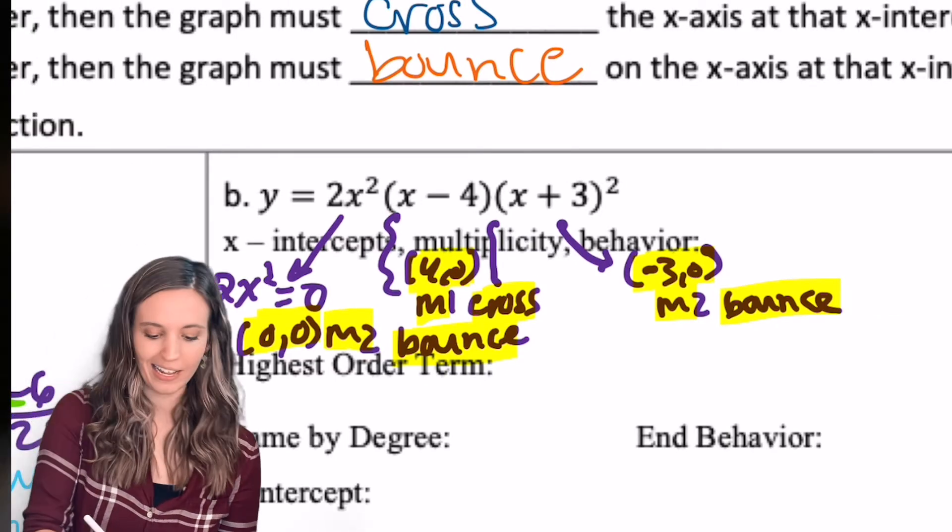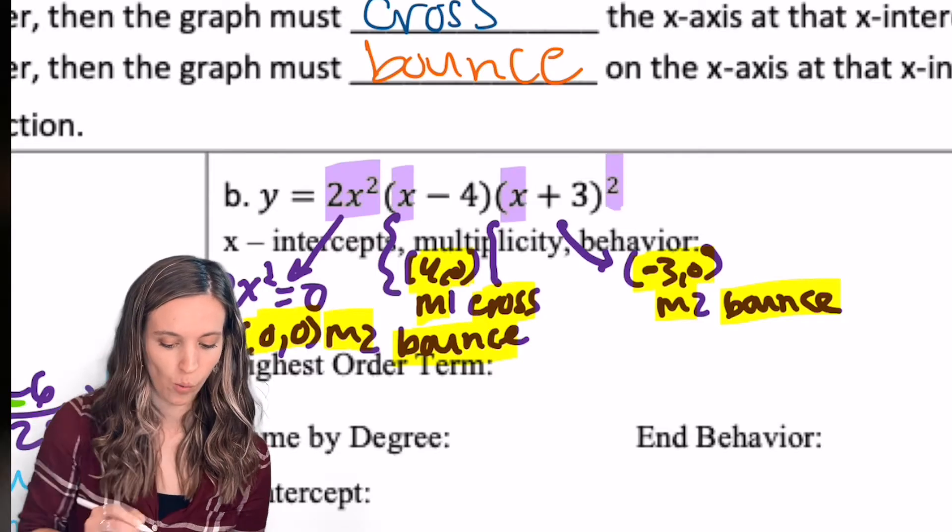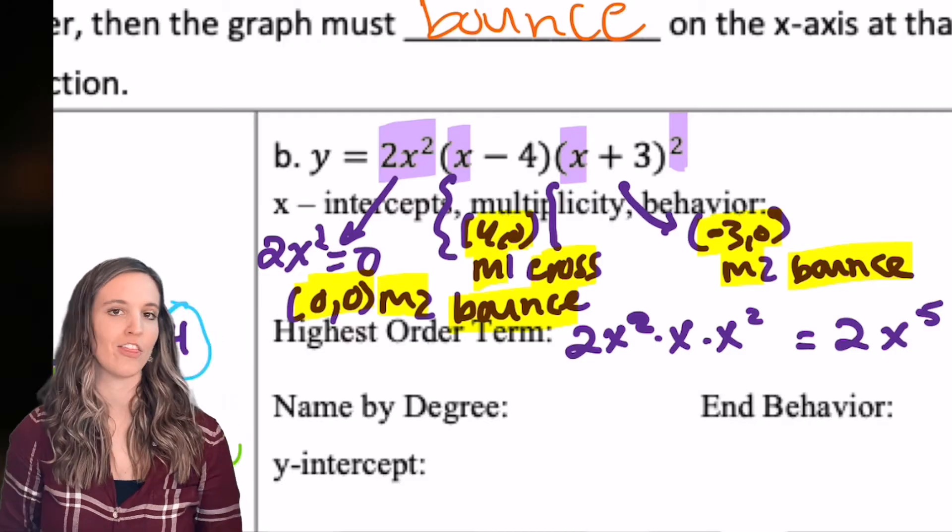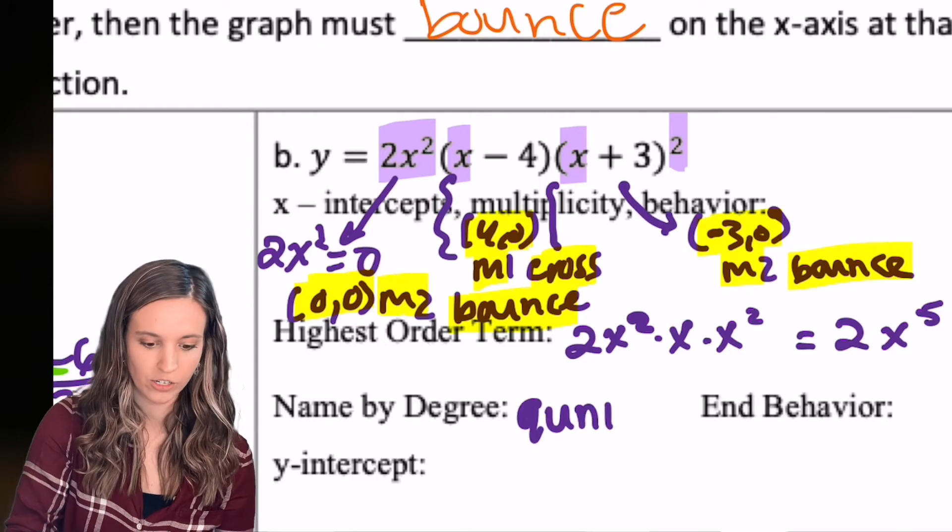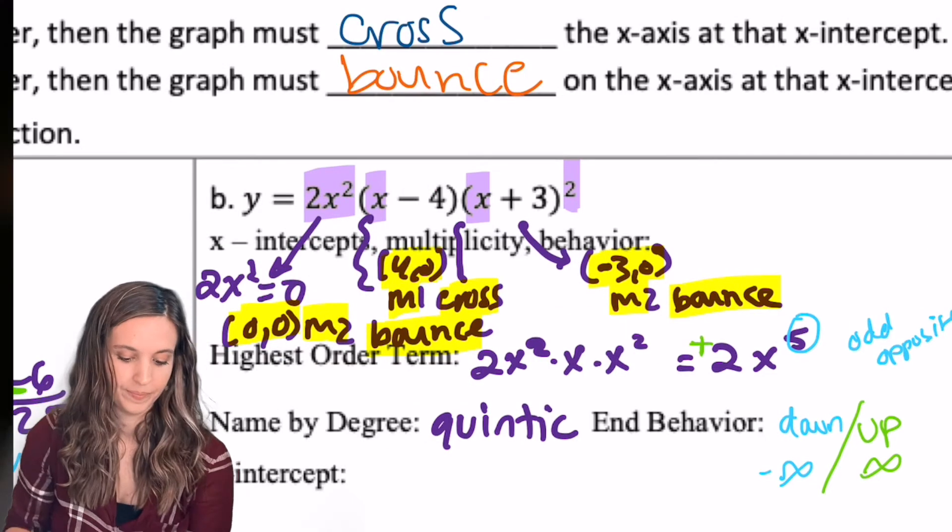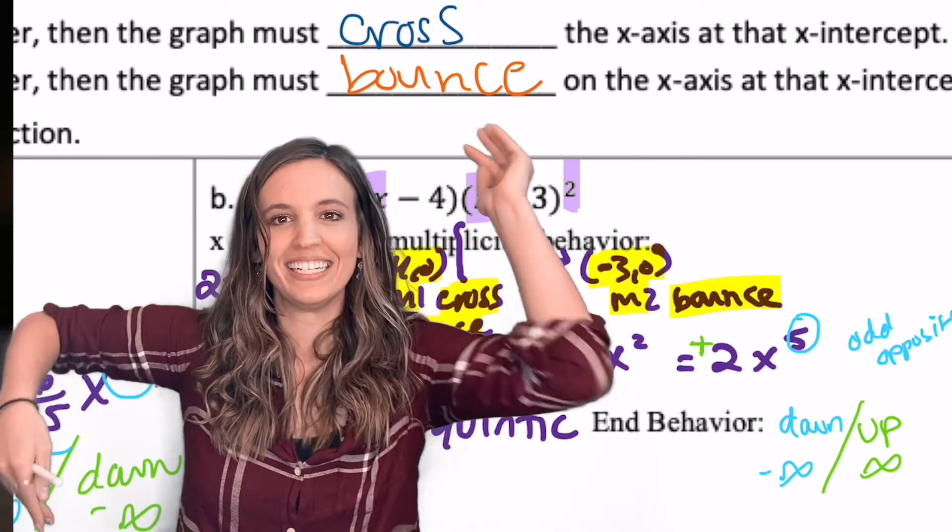Highest order term. Let's multiply 2x squared times x times x squared. So we get 2x to the fifth. Awesome. That means I've got a quintic here because I got a degree of five. What's my end behavior? See if you can beat me to it. End behavior, negative infinity infinity, down, up.